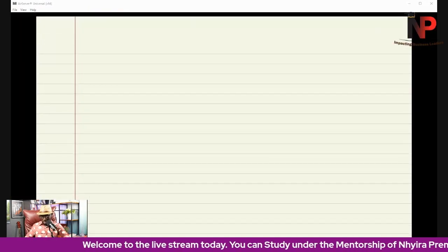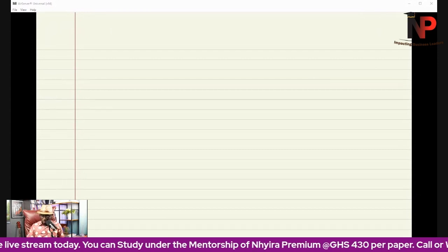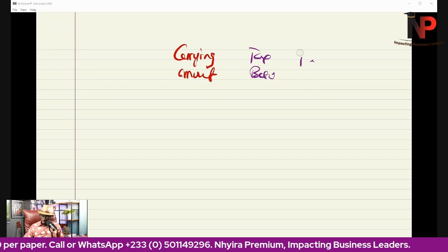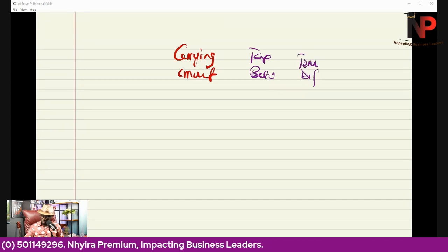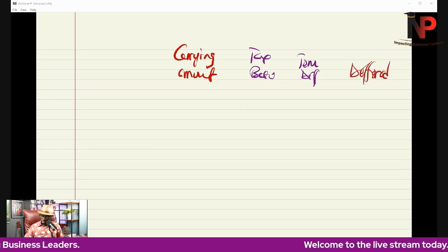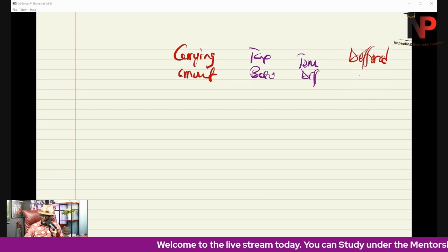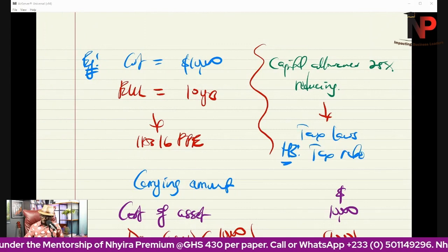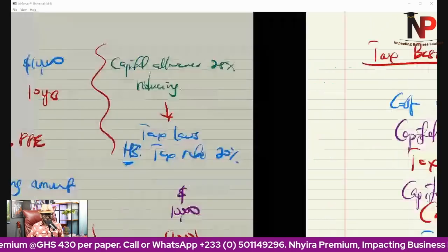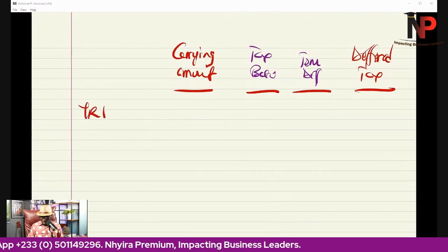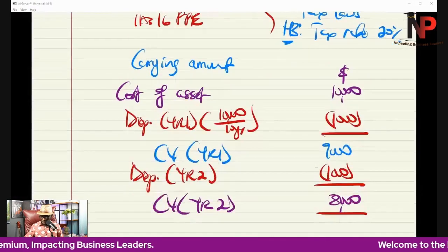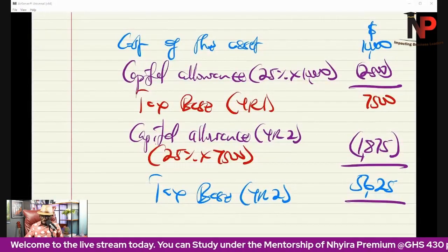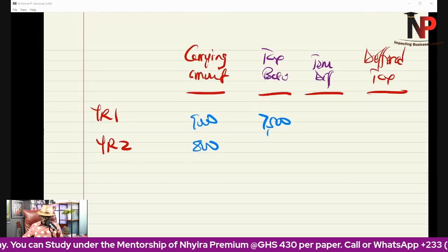We now put our schedule up with columns for carrying amount, tax base, temporary difference, and deferred tax. The tax rate in this illustration is 20%. In year one: carrying amount is $9,000, tax base is $7,500. In year two: carrying amount is $8,000, tax base is $5,625.